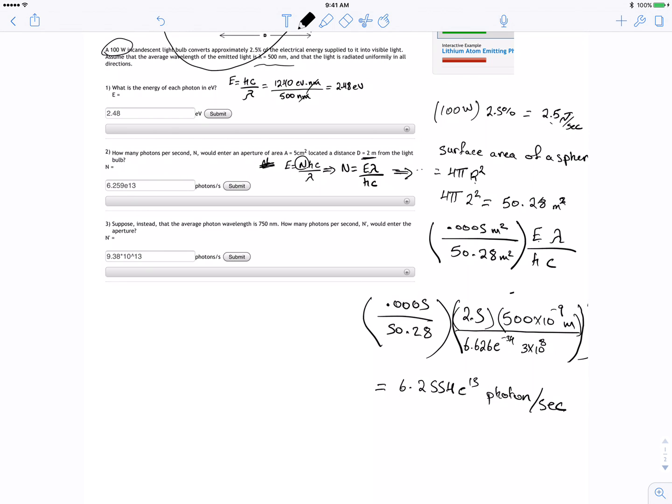Sounds good. So this is for number 2. For number 3, they only changed the wavelength to 750. So when you look at the whole equation, the only thing they did is they changed this guy.